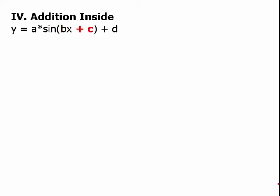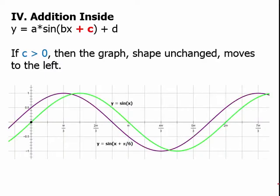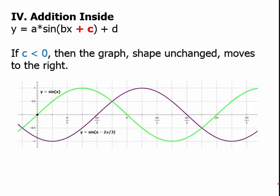Addition on the inside moves the graph to the left — again, anti-intuitive. For example, y equals sine (x + pi/6) shifts the curve to the left. If we subtract inside, the shape moves to the right. So y equals sine (x − 2pi/3) shifts the whole graph over to the right.